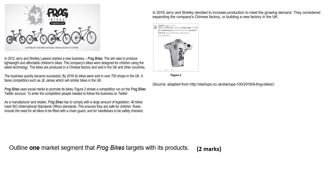Frog Bikes uses social media to promote its bikes, including a competition run on its Twitter account where people needed to follow the business to enter. As a manufacturer and retailer, Frog Bikes has to comply with a large amount of legislation — all bikes meet ISO standards to ensure they are safe for children, including requirements for a chain guard and safety-checked handlebars. In 2016, Jerry and Shelley decided to increase production to meet growing demand, considering expanding the Chinese factory or building a new factory in the UK.